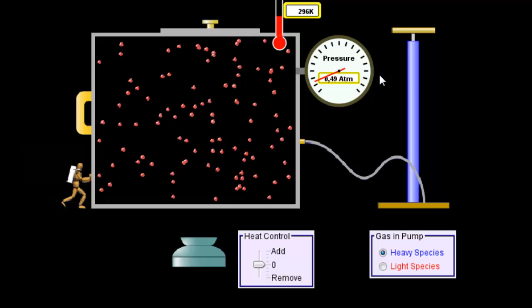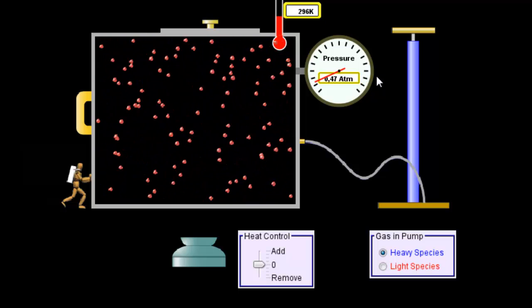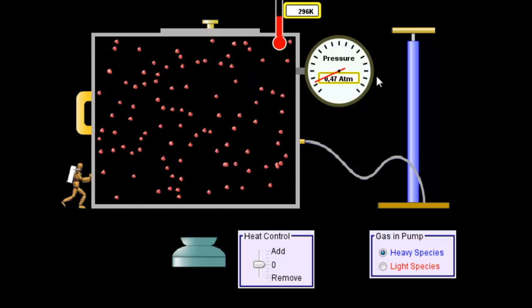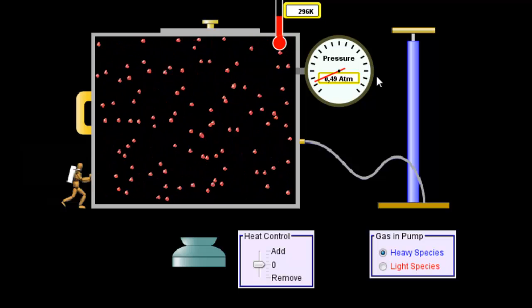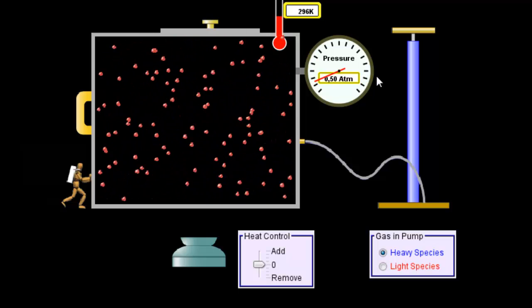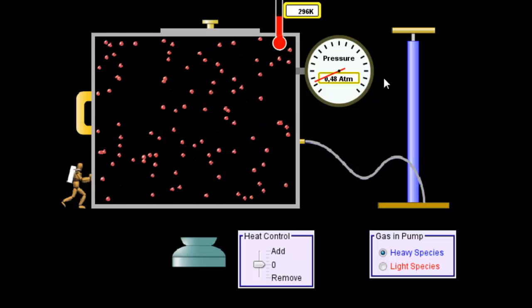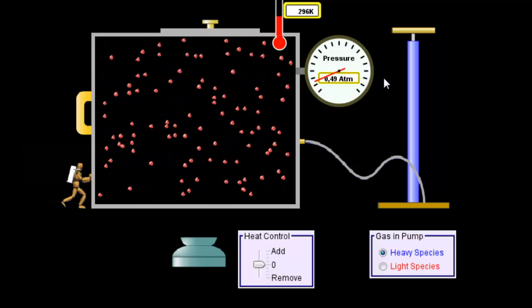This pressure gauge doesn't measure pressure in pascals. It measures pressure in units called atmospheres. One atmosphere is the standard atmospheric pressure that you and I feel right now as we sit in your room at a computer. This is about half an atmosphere.